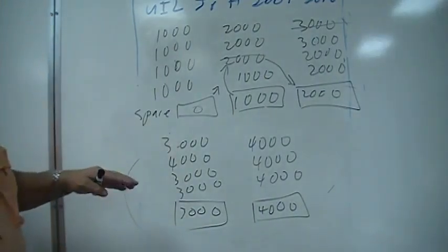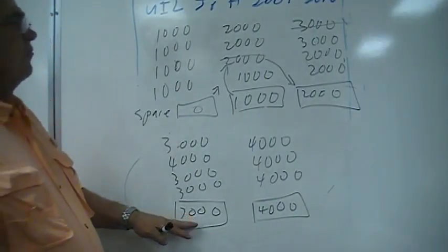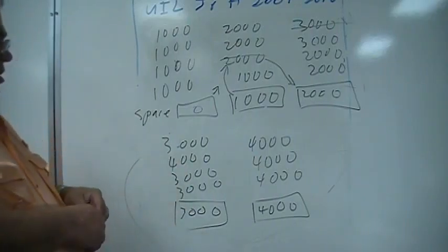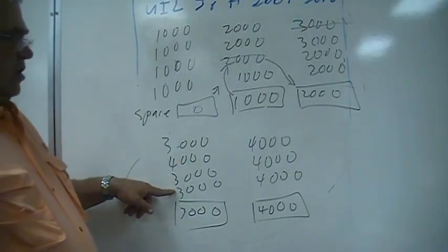And then you put one of these three thousand ones in there and replace it with that, so now you're going to have three thousand, four thousand, three thousand, three thousand.